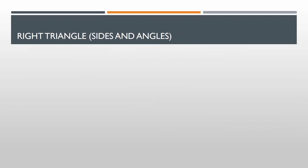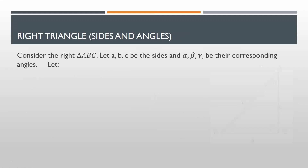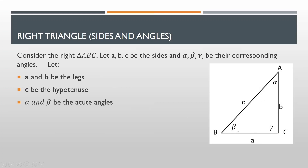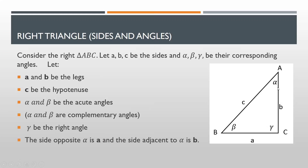Now I'm about to discuss the sides and angles of a right triangle. Consider the right triangle ABC. Let A, B, and C be the sides, and alpha, beta, and gamma be their corresponding angles. We would let A and B be the legs, C be the hypotenuse, alpha and beta be the acute angles — which are complementary angles as well because their sum should be equal to 90 degrees — and gamma be the right angle. The side opposite alpha is a, and the side adjacent to alpha is side b. The side opposite beta is b, and the side adjacent to it is a.